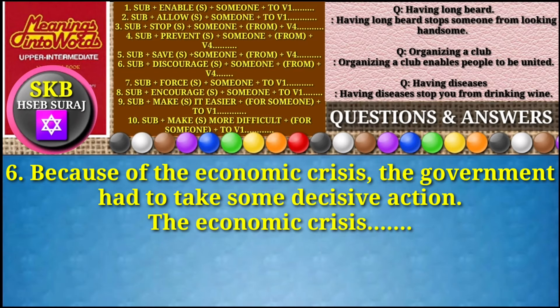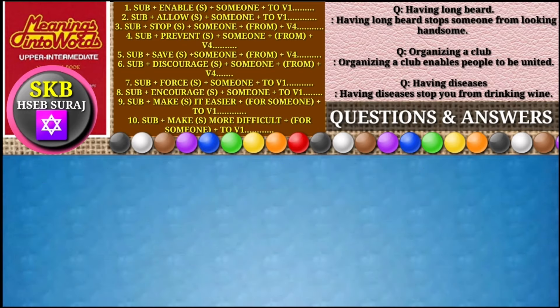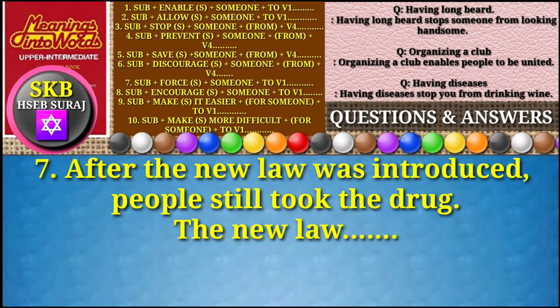Question number six: 'Because of the economic crisis, the government had to take some decisive action.' Start your answer with 'the economic crisis.' Answer: The economic crisis forced the government to take some decisive action.